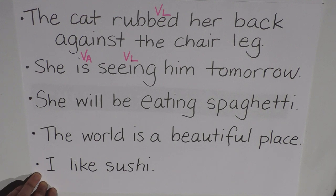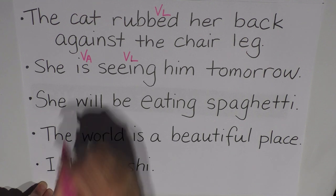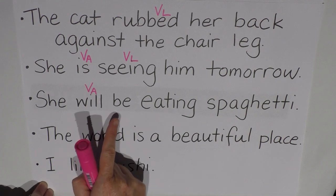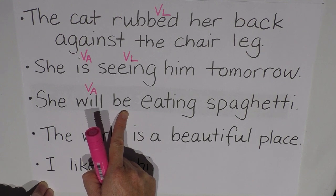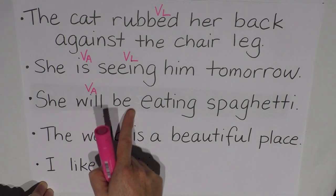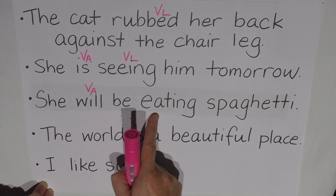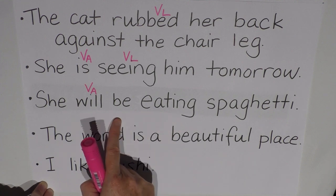Let's look at the next one: She will be eating spaghetti. 'Will' is nice and easy because I know it's a modal auxiliary verb — it's one of the list of modal auxiliary verbs, so I'm automatically going to say that this is a modal auxiliary straight away. Now we've still got 'be' after that. I know that 'be' is a form of is/am/are/be, so it could be a primary auxiliary or a lexical verb. And we've got 'eating' after it as well. So we've got two auxiliary verbs and there's our lexical.